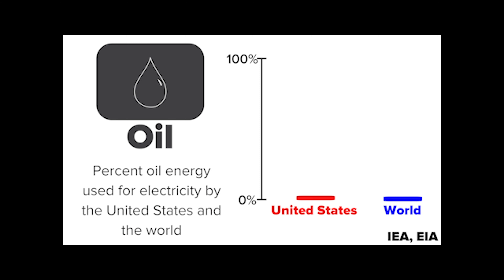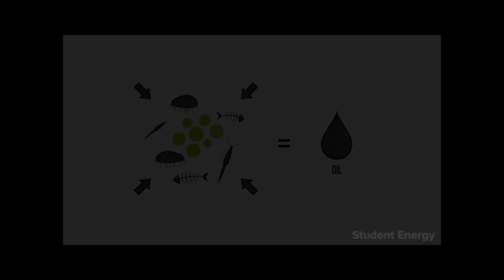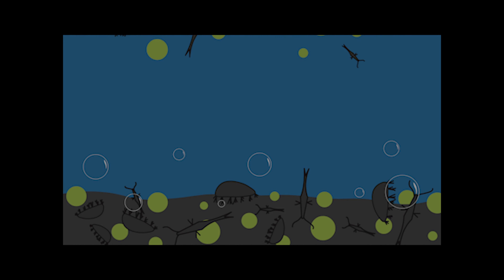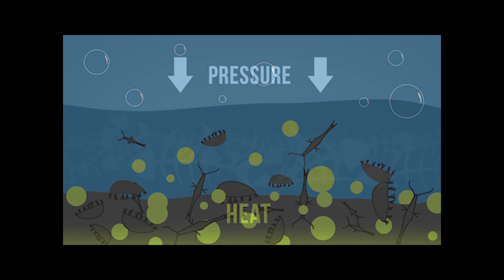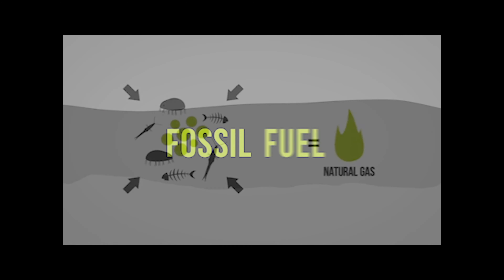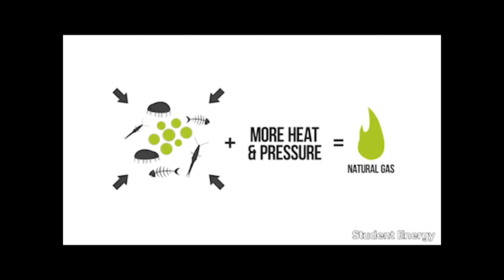The oil we use today was formed in ancient oceans from the burial of large amounts of plankton that fell to the bottom of the ocean and were buried and heated over time. Extreme temperatures and large amounts of plant-based debris are more favorable for the production of lighter oils and natural gas.